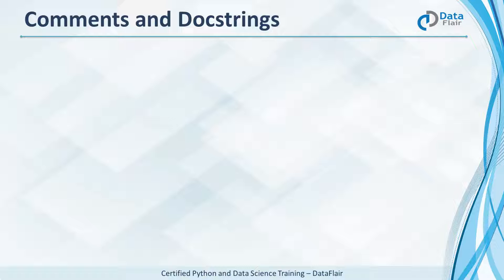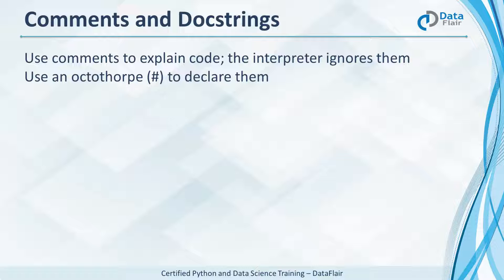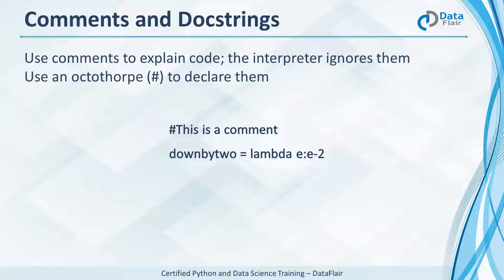Say you found a job as a Python developer in a prestigious organization. You won't always be on one project — other developers may be assigned to it later, and your code needs to be understandable. Comments come in handy here. They help explain code, and the interpreter simply ignores them. In Python, we declare comments with the octothorpe, which is the hash symbol on your keyboard. Unlike C++ and Java, Python has no support for multi-line comments; you'll need to use a hash at the beginning of each line.